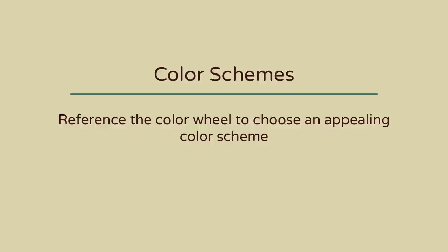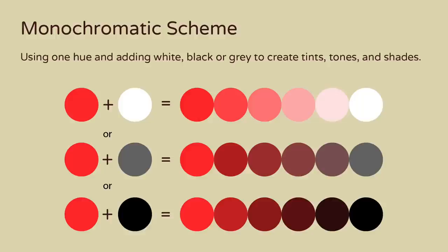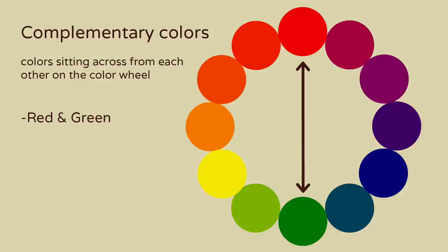The color wheel is a great reference when you're choosing an appealing color scheme. Here are some of the most common types of color schemes. A monochromatic color scheme is made up of one hue plus either white, black, or gray. Here you have a variety of tints, tones, and shades of red.